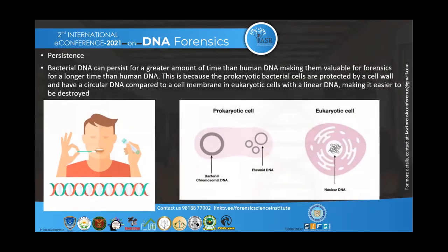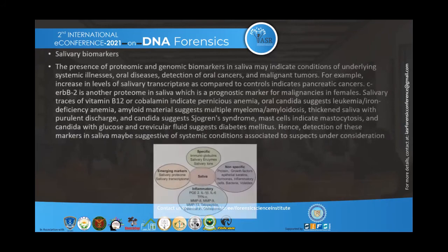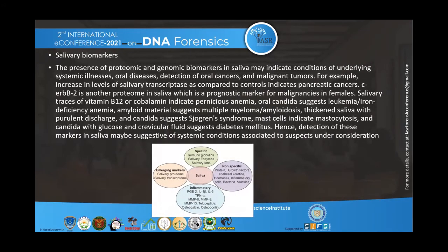Human DNA consists of eukaryotic cells, while bacterial DNA consists of prokaryotic cells. Eukaryotic linear DNA can be destroyed more easily, whereas prokaryotic DNA is protected by a cell wall and not easily destroyed, making bacterial DNA more persistent.